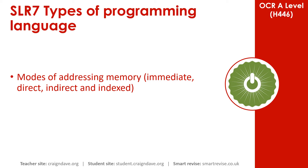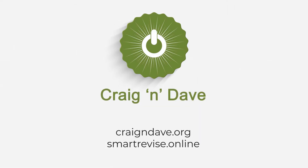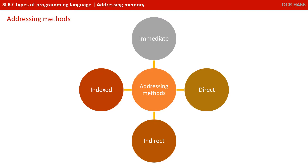In this video, we take a look at modes of addressing memory, including immediate, direct, indirect, and indexed. As we know, information is stored when a computer is running in main memory, and these locations in main memory are addressed. There are various addressing modes which can be used. Four that you need to know about are shown on the screen now. Let's look at them in a little more detail.